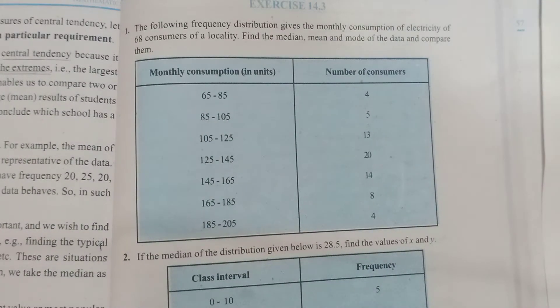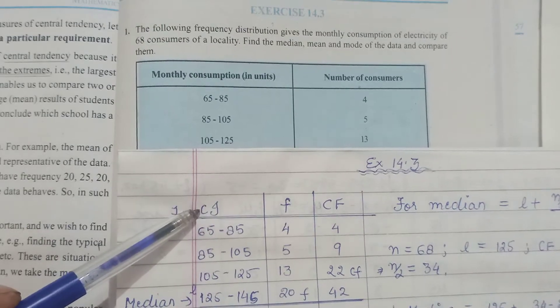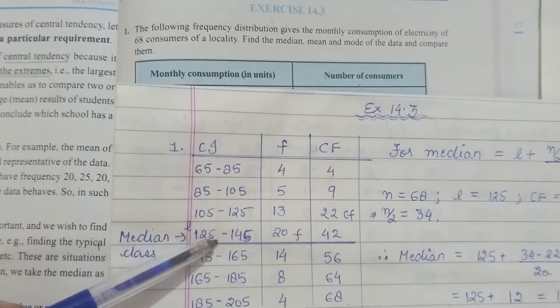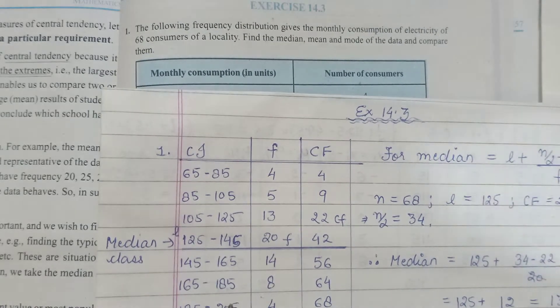Back to this question. This data was given to you - those are your CIs: 65 to 85, 85 to 105, 105 to 125, so and so forth, and then frequency was given to you.